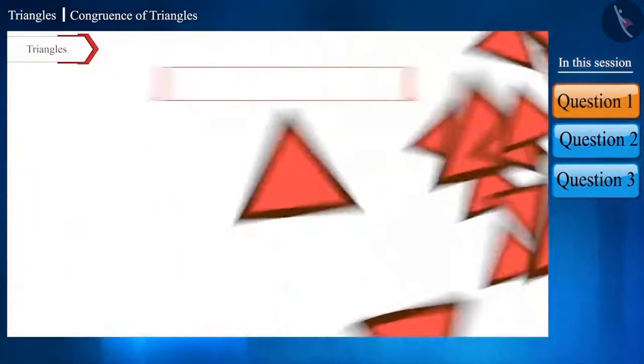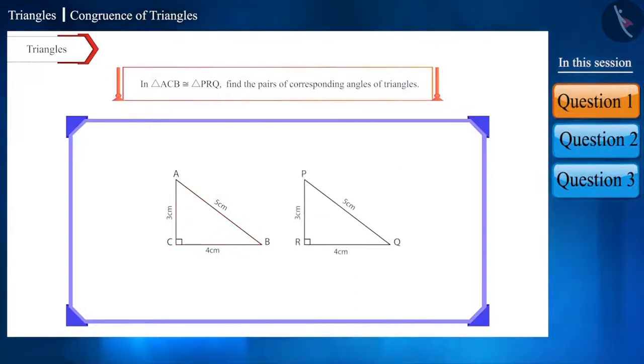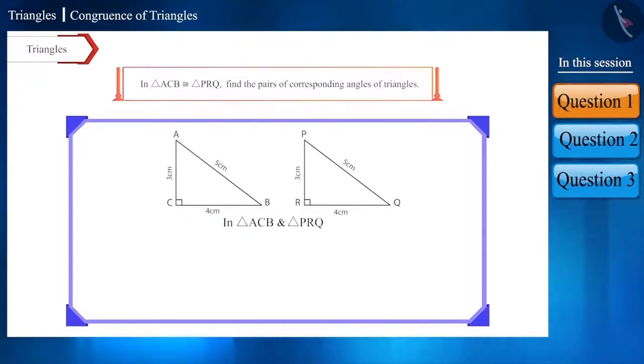Let's take the first question. If triangle ACB is congruent to triangle PRQ, then find the pairs of corresponding angles of these triangles. The answer to this question is very easy. Here are their pairs of corresponding angles.